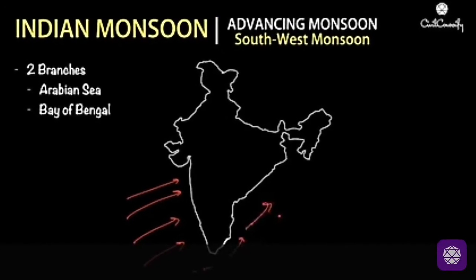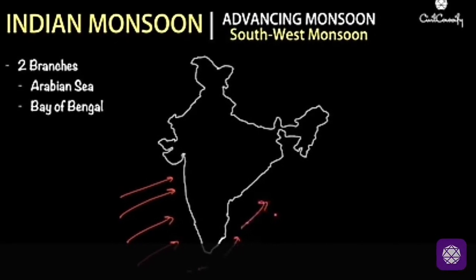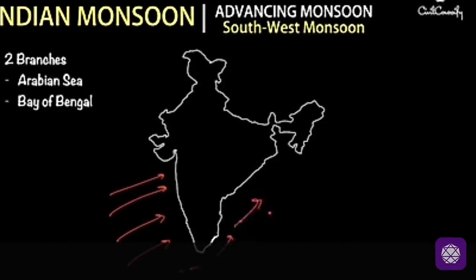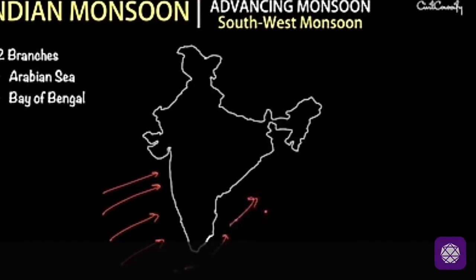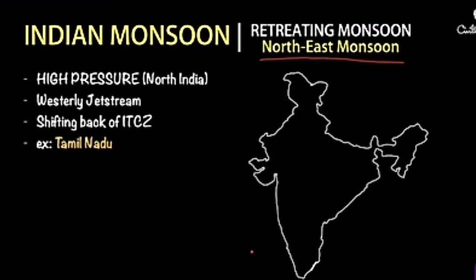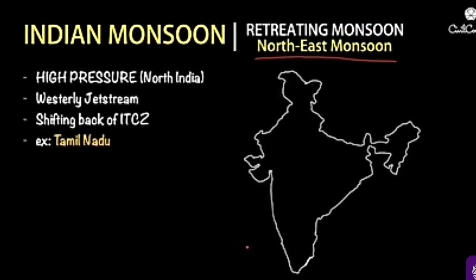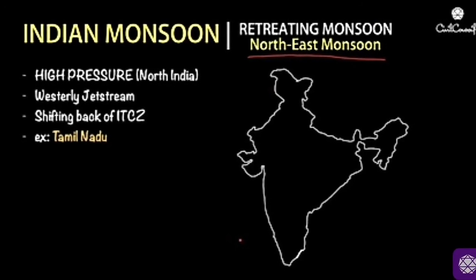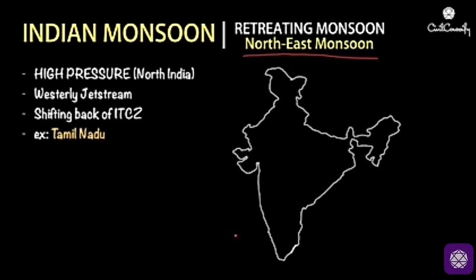To summarize what we discussed today: first, the duration of monsoon is 100 to 120 days. Then, the burst of monsoon. The monsoon arrives at the southern tip of India in the first week of June and subsequently gets divided into two branches.